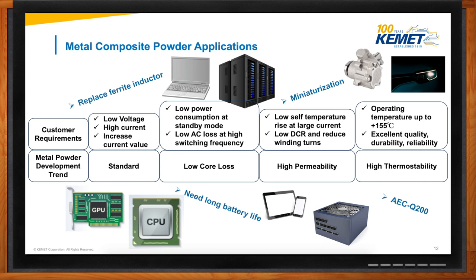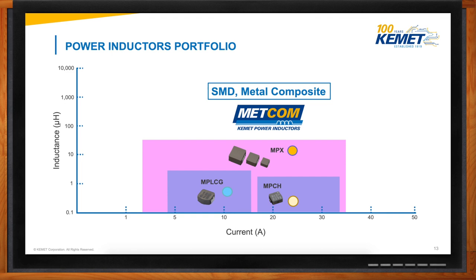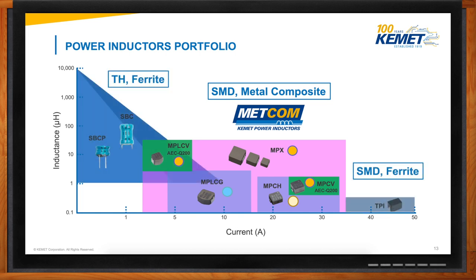There are a lot of different possibilities. We have a set of different inductor products that started with a simple powder. First was to expand on the current size, and then with newer powders we were trying to reach higher inductances and get into automotive. In the fringes, we still have ferrite material because with metal composite you cannot go to the extremes — so we still need ferrite-type inductors as well.